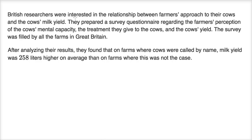British researchers were interested in the relationship between farmers' approach to their cows and cows' milk yield. They prepared a survey questionnaire regarding the farmer's perception of the cow's mental capacity, the treatment they give to the cows, and the cow's yield. The survey was filled out by all the farms in Great Britain. After analyzing their results, they found that on farms where cows were called by name, milk yield was 258 liters higher on average than on farms where this was not the case.